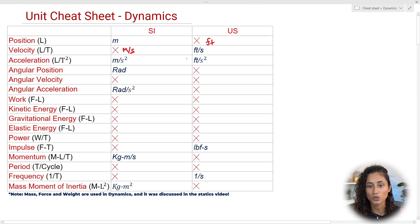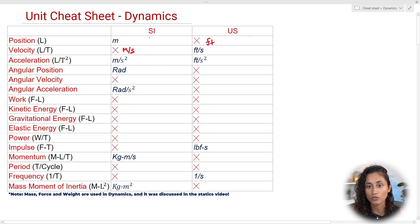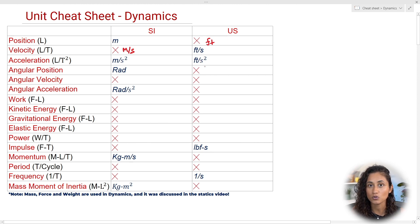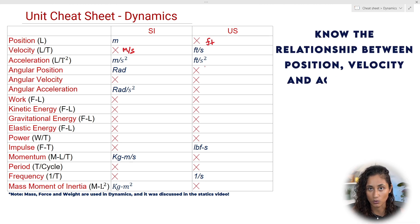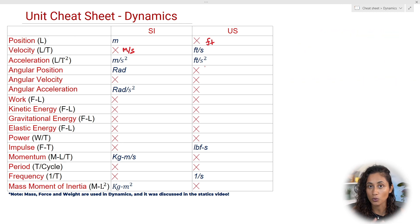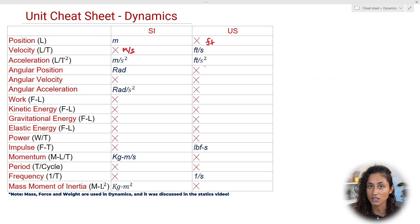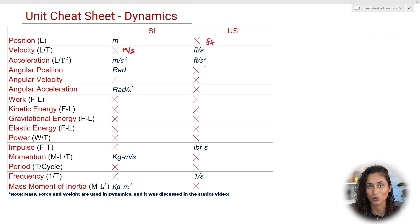Acceleration has the units of length per time squared, so for SI that would be meters per second squared, and for US that would be feet per second squared. Also, keep in mind the relationship between position, velocity, and acceleration — make sure you know that if you are taking your FE exam or a dynamics course.